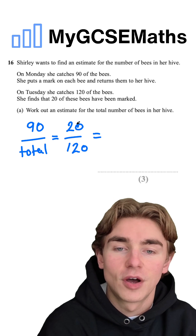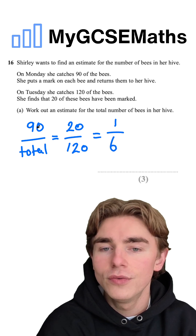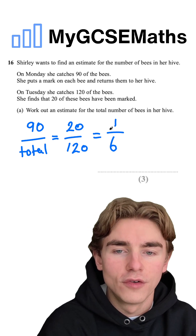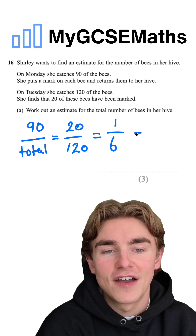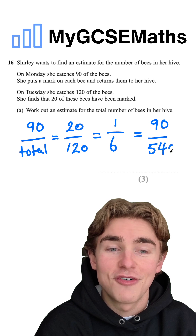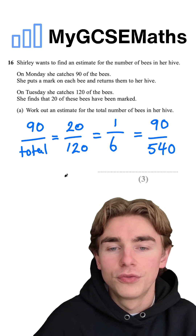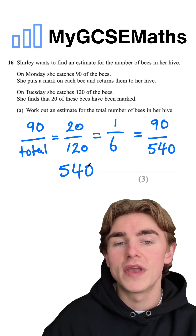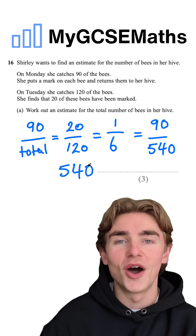We can simplify this fraction — divide top and bottom both by 20 — and we're going to get 1 over 6. So the total number has to be such that 90 out of that number is equal to 1 over 6. 90 times 6 is 540, so 90 out of 540 is going to be equal to 1 over 6. I ran out of room there, so I had to explain it in a little bit of a different way. Hopefully this makes sense. Our total number is going to be 540, because this is the number of bees which, when we have 90 of them marked, gives us a probability of choosing one of 1 over 6.